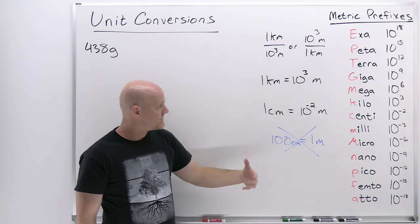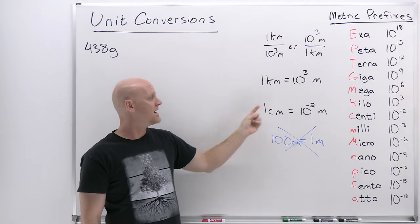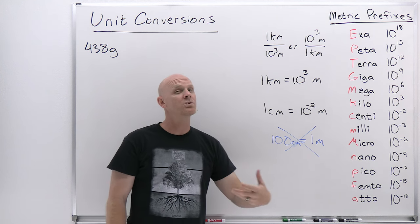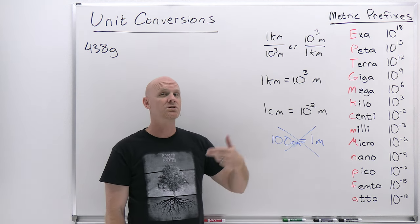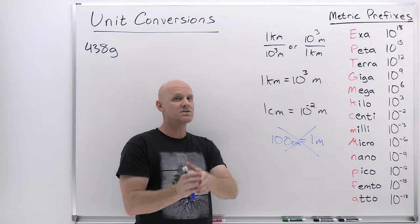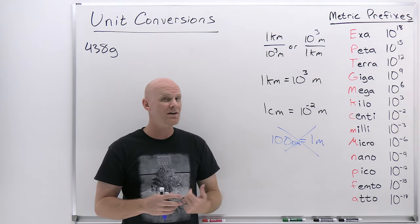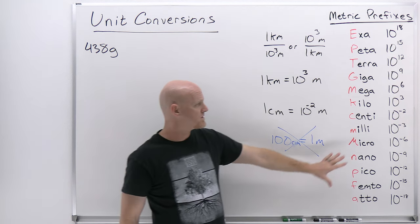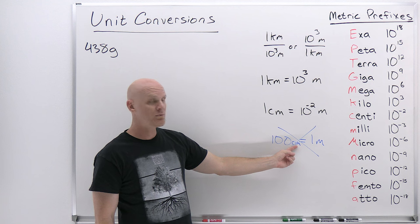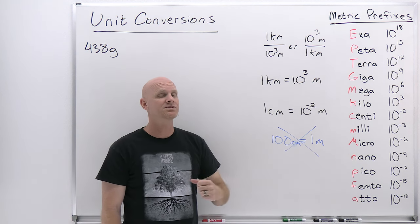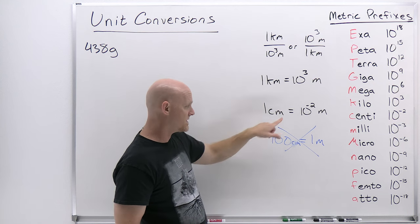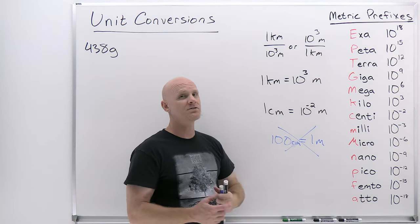Always place the number one next to the unit that has the prefix, and put the appropriate power of 10 next to the base unit. If converting between two prefixed units like centimeters to kilometers, convert through the base unit — first centimeters to meters, then meters to kilometers. That way every step of the conversion always involves the base unit. Never put a power of 10 with the prefixed unit and a one with the base unit, as most standard textbooks will avoid this as well.